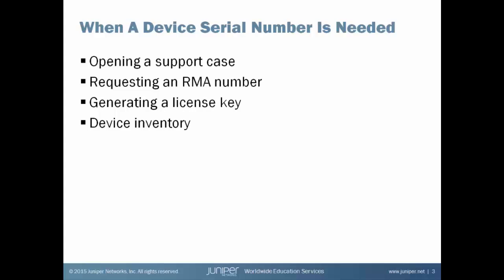If you need to return a device or component to Juniper Networks, you have to obtain a Returned Materials Authorization Number, and to obtain that number you must provide the serial number for the device or component that's being affected.